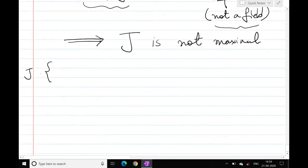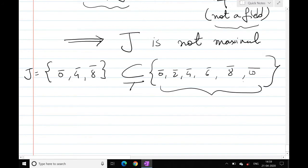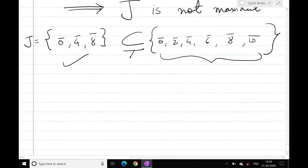If you clearly observe J is equal to {0, 4, 8}, this ideal is properly contained in a larger ideal. This ideal is larger than J, so obviously this clearly tells me that J cannot be maximum.